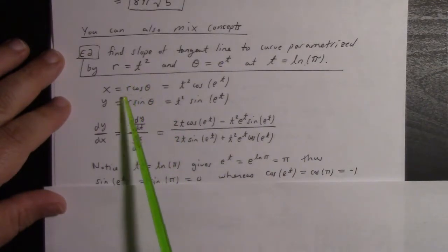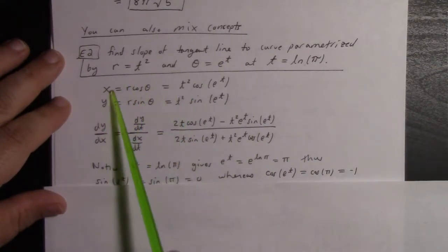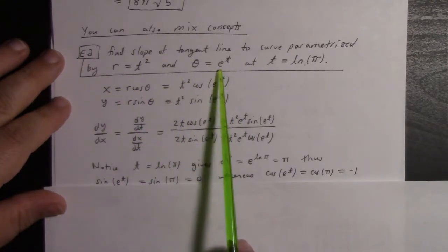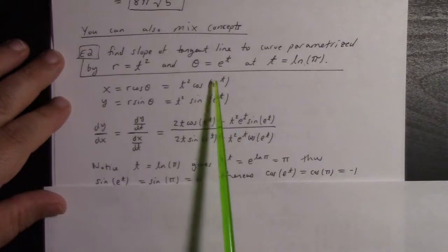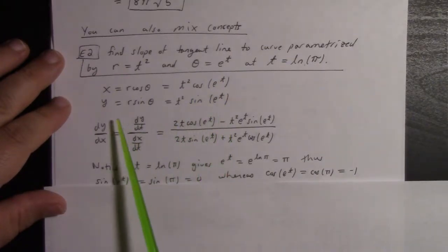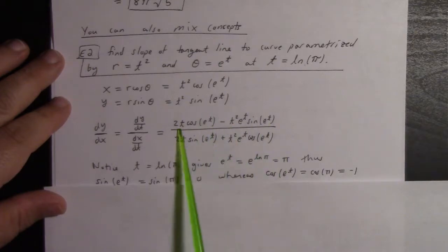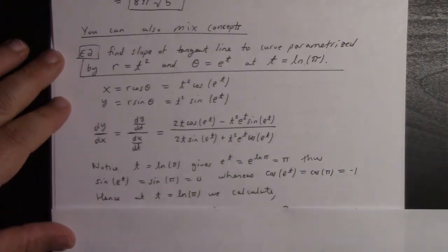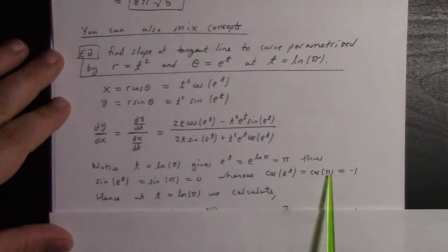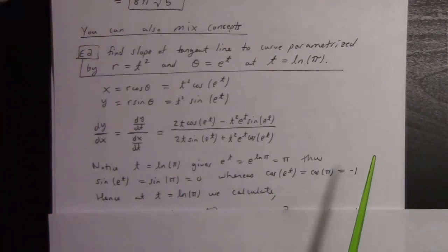So x = r cos(θ), y = r sin(θ). To find the Cartesian parametrizations corresponding to this polar parametrization, I get t² cos(e^t) and t² sin(e^t). So dy/dx works out to this by the usual song and dance. Some really neat stuff happens since t = ln(π): e^t = e^ln(π) = π. So sin(e^t) = sin(π) = 0, and cos(e^t) = cos(π) = -1.